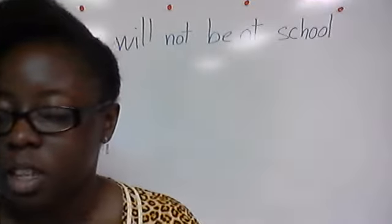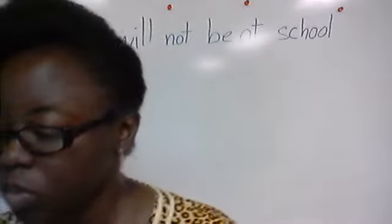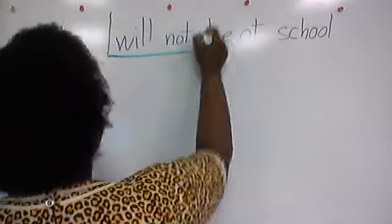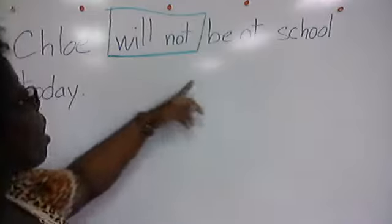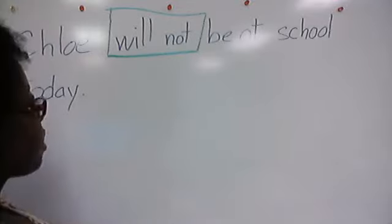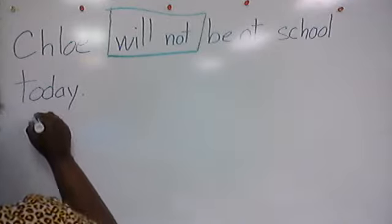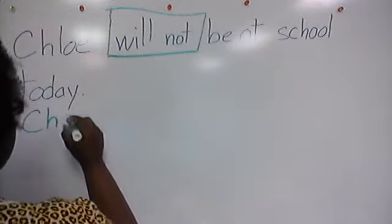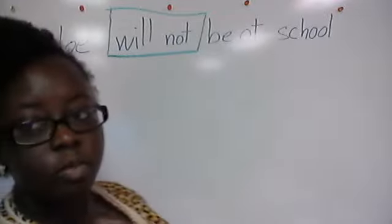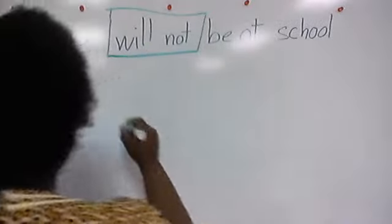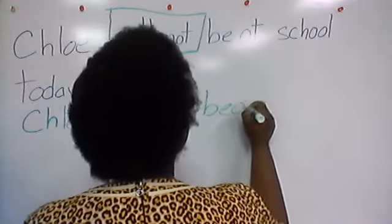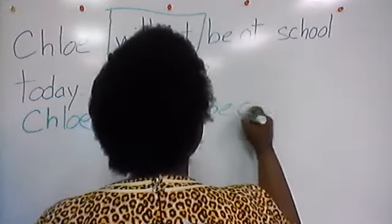The instructions say: rewrite the sentences making the words in the boxes contractions. On your paper, 'will not' is in the box. The sentence says 'Chloe will not be at school today.' So 'will not' becomes 'won't' — take 'will' and 'not' and it becomes 'won't.' So you rewrite the sentence as 'Chloe won't be at school today.'